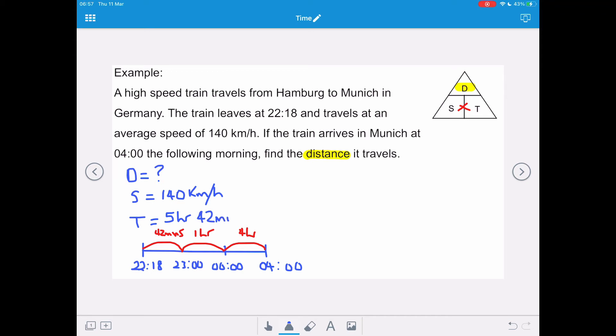That gives us a total of 5 hours and 42 minutes. We need to change that into decimal time before we can use our distance equals speed times time formula. And we do that by 5 plus 42 divided by 60, which is 5 plus 0.7, giving us 5.7 hours as our decimal time.